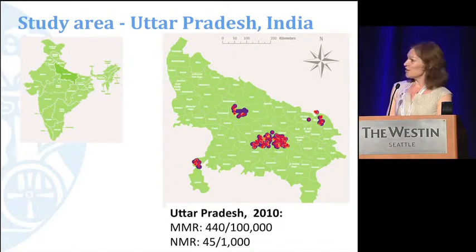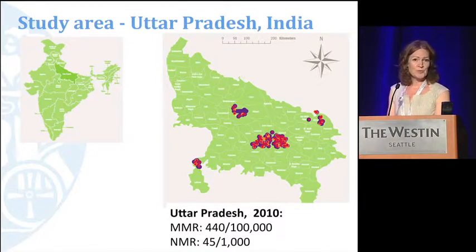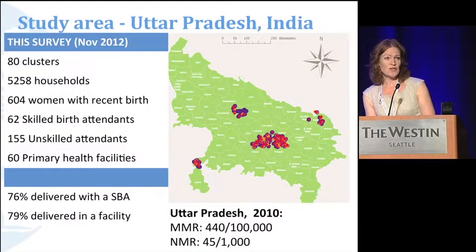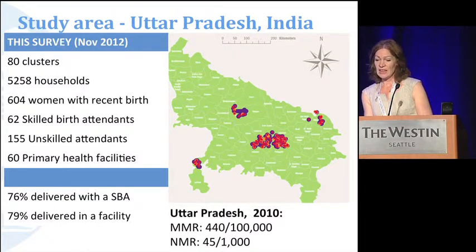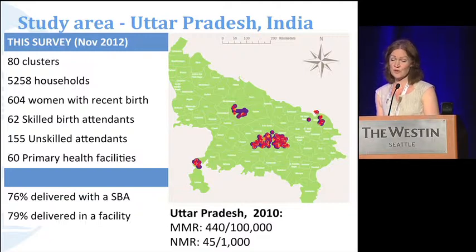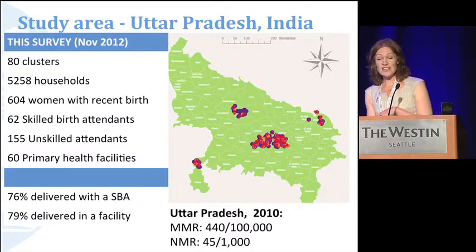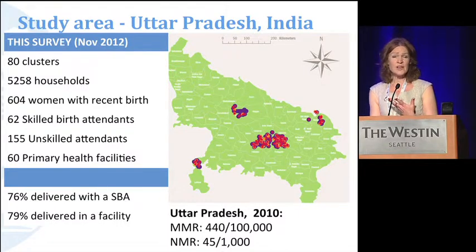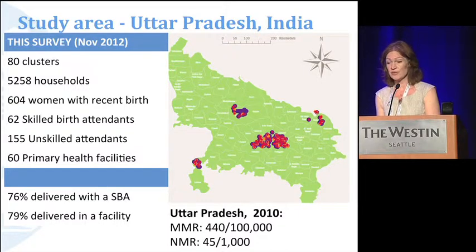In Uttar Pradesh, we surveyed six districts, visited over 5,000 households, interviewed 604 women in detail about their last birth, 62 skilled birth attendants, and surveyed 60 primary health facilities. From this data, we found that 76% of women interviewed had delivered with a skilled birth attendant in the last year, and 79% had delivered in a health facility. These findings are quite consistent with other available data for those six districts.